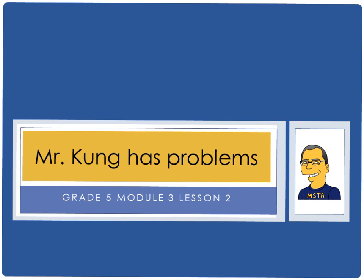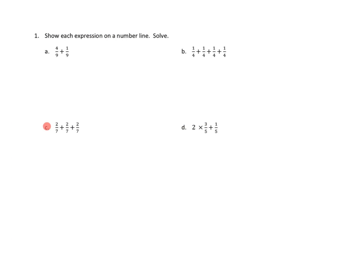Hello, and welcome to another episode of Mr. Kung Has Problems. Tonight, in Grade 5, Module 3, we are working on Lesson Number 2, and we are making equivalent fractions with sums of fractions with like denominators. So let's take a look at a few problems from tonight's work. I think I'll do three.